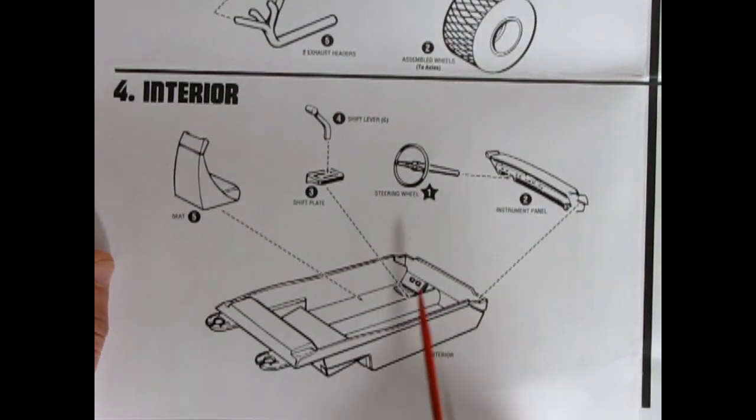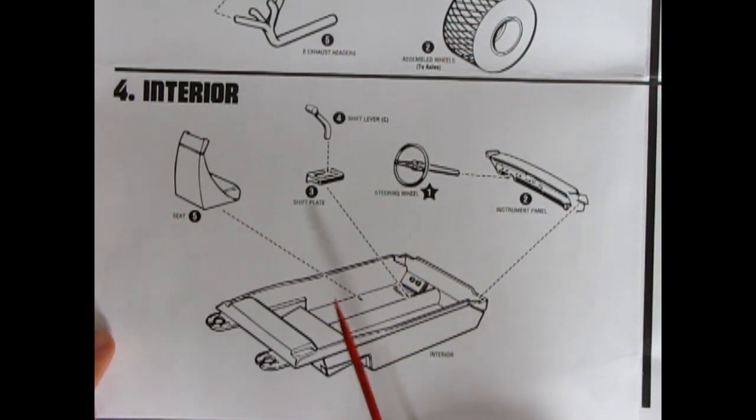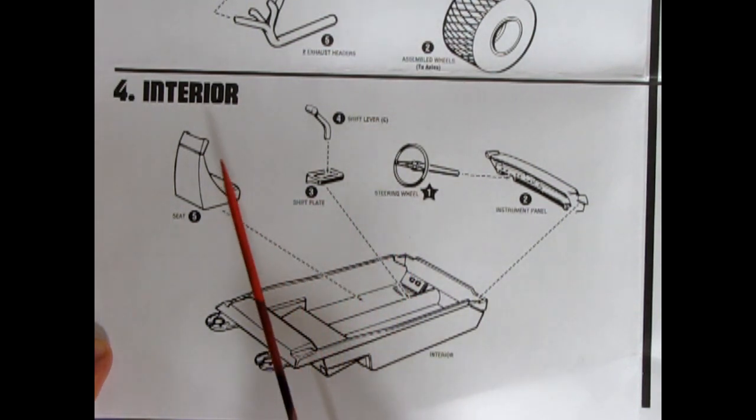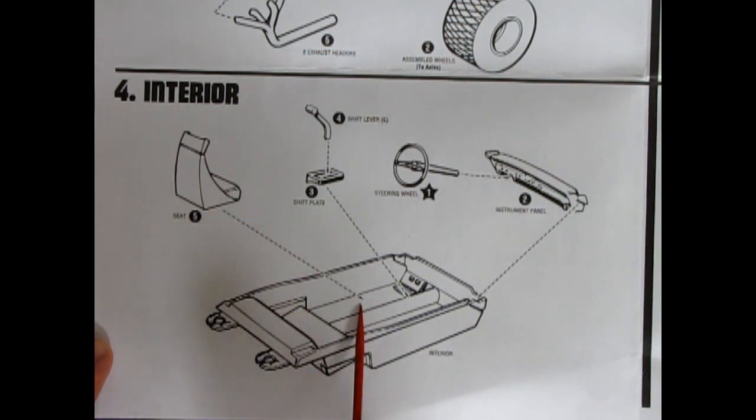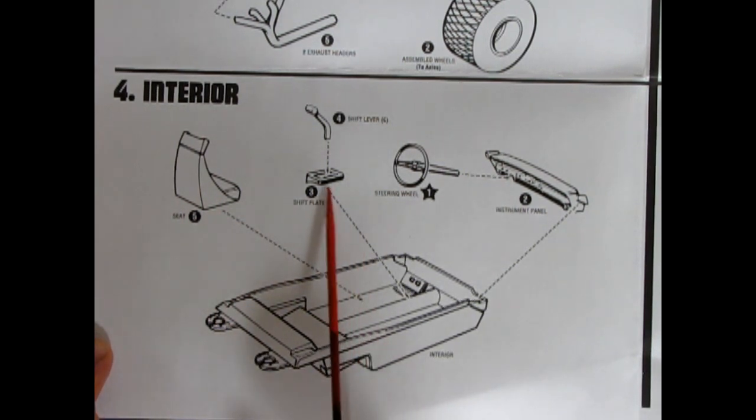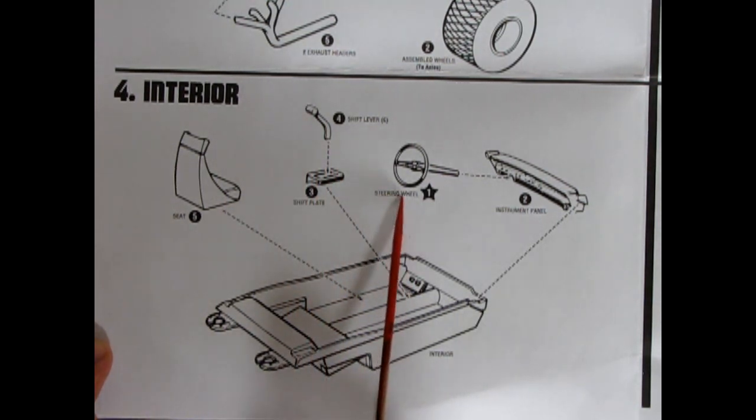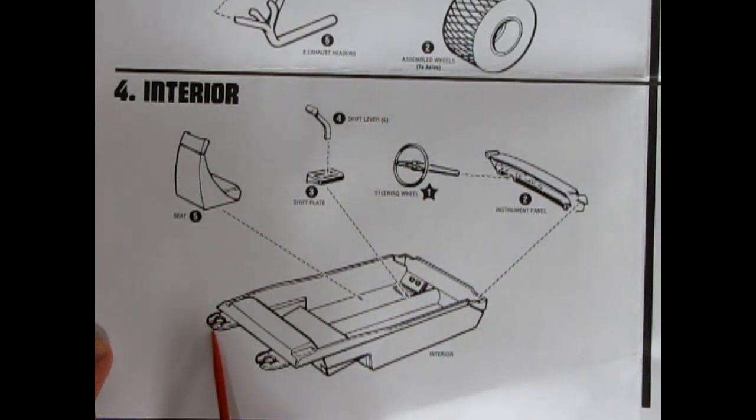And, here we have our interior. Now, this is a little bit different from the way they did the Oldsmobile. And, I'll show you in just a minute. This is the first step of our interior. So, we have, again, our racing seat with the four seat belt harness going right into the floor boards. Then, we have a shift plate and our shifter lever. Sorry. So, that's two pieces. As well as our steering wheel and our instrument panel. And, if you see here. We've got the little clips again.